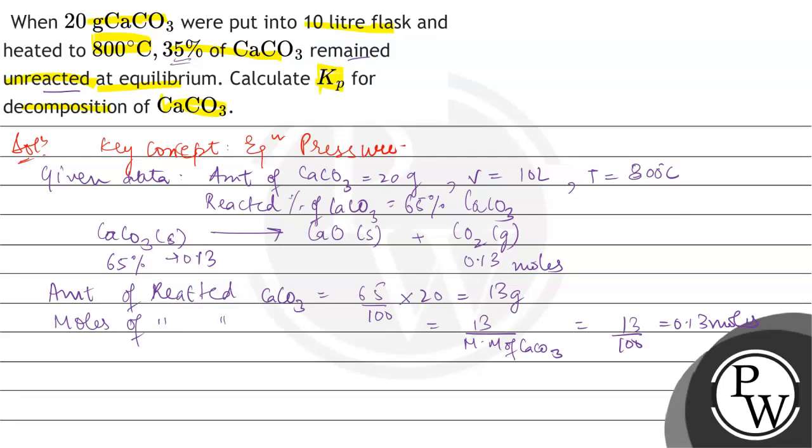We need to calculate the Kp for decomposition, meaning we need to find the equilibrium pressure. In this reaction flask, there is solid calcium carbonate, solid calcium oxide, and gaseous CO2. Since we don't count the pressure of solids.